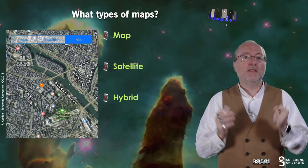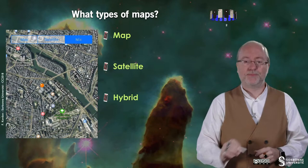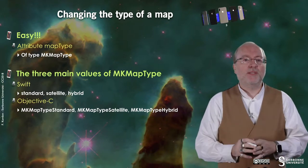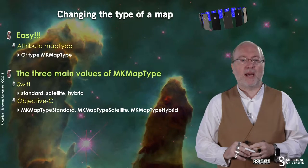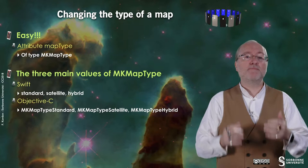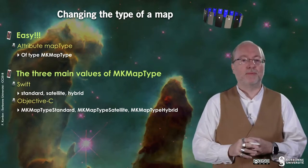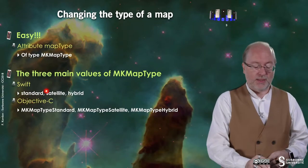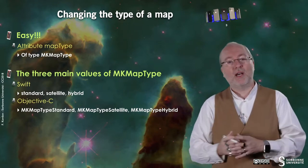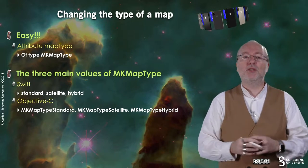The idea is to manipulate these types of maps. To change the map type it's quite easy because you have an attribute called mapType, located in MKMapView. This mapType is of type MKMapType, and you have basically three main values — there are more but we will deal with those in a further video. The values are standard for the standard map, satellite for the satellite map, and hybrid for the hybrid map. These are the keywords in Objective-C.